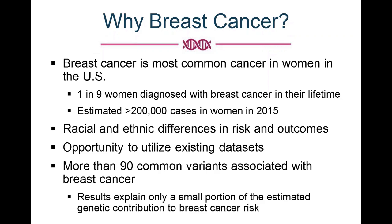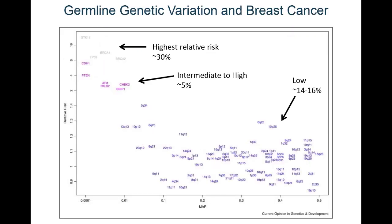We've identified more than 90 common genetic variants associated with breast cancer by GWAS. Looking at relative risk on the y-axis and minor allele frequency, you can see the large number of GWAS-associated variants at the bottom. In addition, rare mutations such as BRCA1 and BRCA2 are associated with higher relative risk. Together, this data tells you that genetics has a big role in the risk of breast cancer.